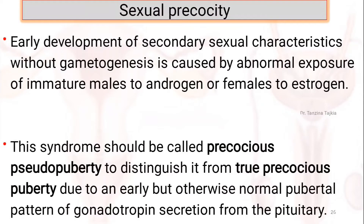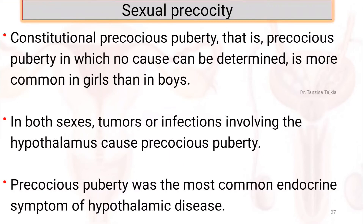Sexual precocity: early development of secondary sexual characteristics without gametogenesis is caused by abnormal exposure of immature males to androgens or females to estrogen. This syndrome is called precocious pseudopuberty, to distinguish it from true precocious puberty due to an early but otherwise normal pubertal pattern of gonadotropin secretion from the pituitary. Constitutional precocious puberty — in which no cause can be determined — is more common in girls than boys. In both sexes, tumors or infections involving the hypothalamus can cause precocious puberty, which was the most common endocrine symptom of hypothalamic disease.